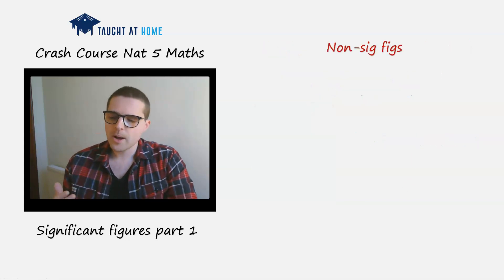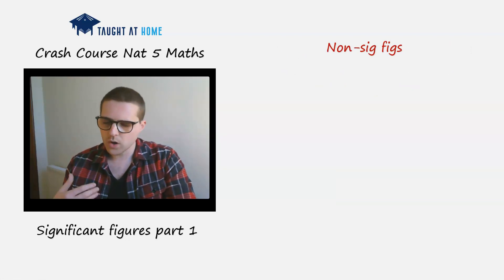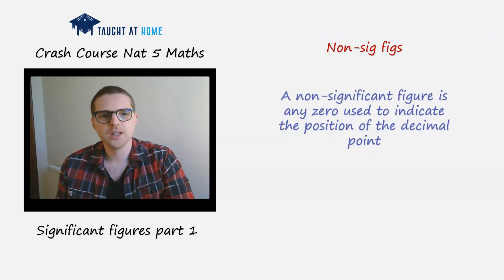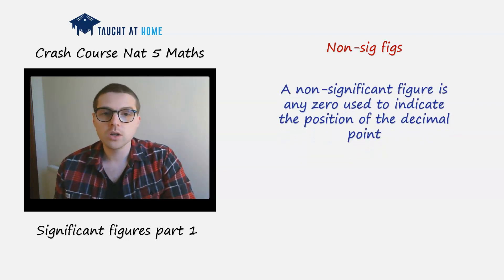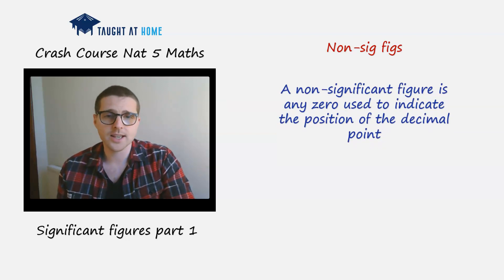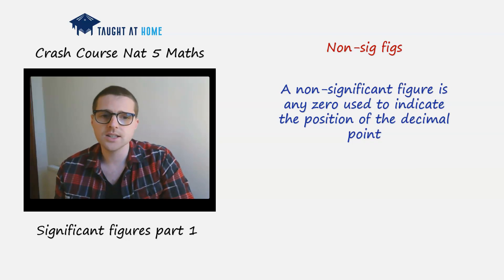You might be wondering what makes a figure significant or non-significant. A non-significant figure is any zero used to indicate the position of the decimal point. This is an extremely important concept to understand. Let's look at an example.